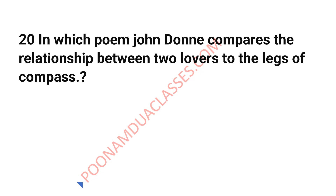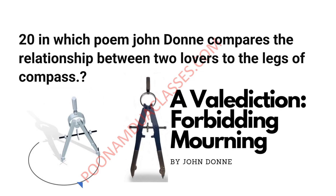Question 20: In which poem does John Donne compare the relationship between two lovers to the legs of a compass? That is 'A Valediction: Forbidding Mourning' by John Donne — the very popular poetry in which Donne says that love should be peaceful and physical distance has nothing to do with it if the love is true.